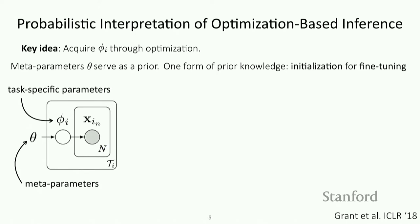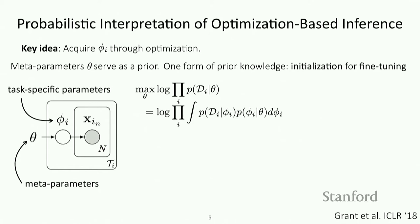If you think about doing inference in this graphical model, we want to maximize the likelihood of our dataset given our meta-parameters. We can write this as a sum of log likelihoods and then introduce task-specific parameters phi_i, which are integrated out because we're optimizing over our meta-parameters theta. This expands as the probability of the data given the task-specific parameters times the probability of the task-specific parameters given theta — that second term representing the prior that theta imposes on our task-specific parameters. This corresponds to empirical Bayes approaches for optimizing this hierarchical Bayesian model.